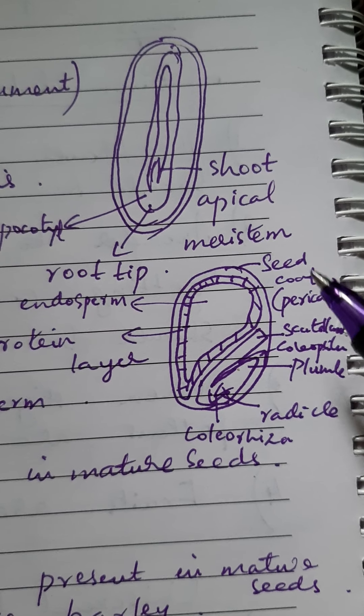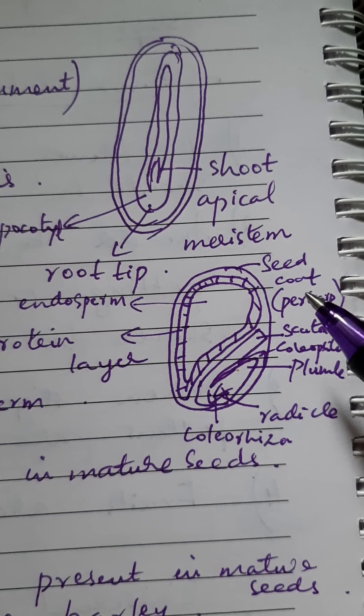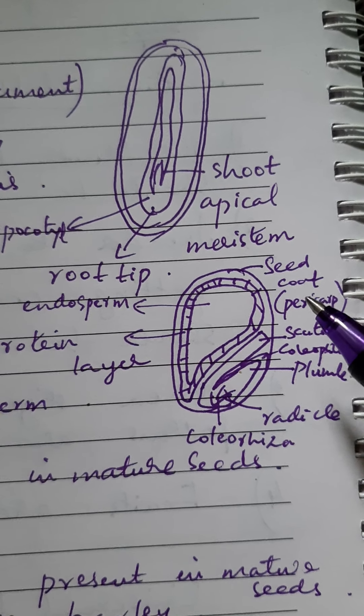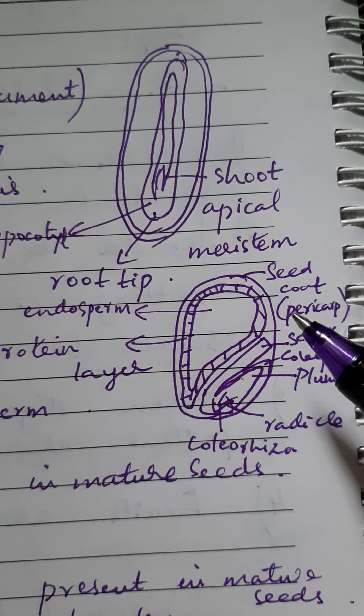What are seed coats? Seed coat before fertilization were the integuments. After fertilization, integuments are called seed coat or testa.